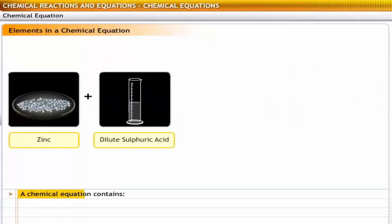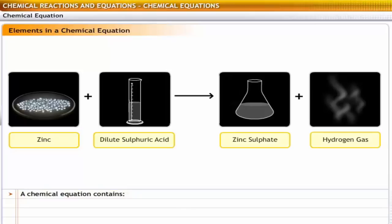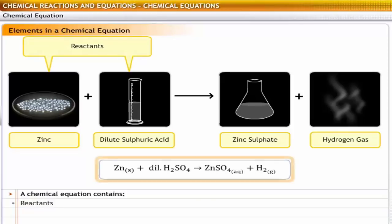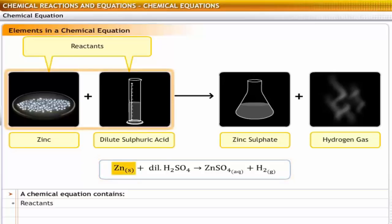A chemical equation is made up of the following components. The reacting substances, known as reactants, are on the left-hand side. For example, in the equation you just saw, zinc and dilute sulfuric acid are the reactants. Therefore, they are on the left in the equation.